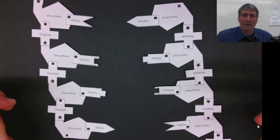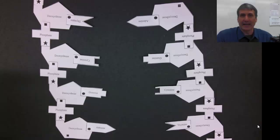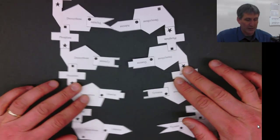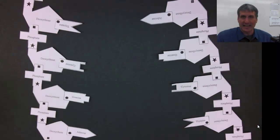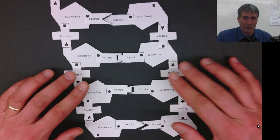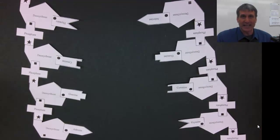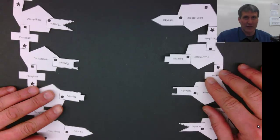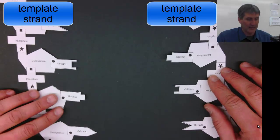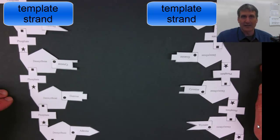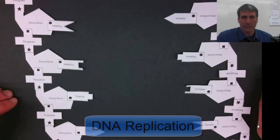Because these bases are where the genetic code is stored, where the genes are, where the information to make the proteins is in these sequence of bases. So the molecule needs to be able to unzip so that the genetic information can be accessed.